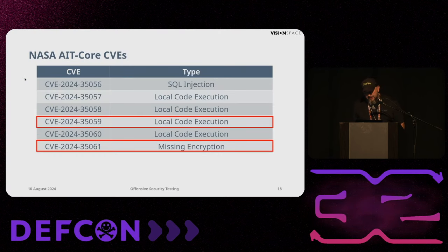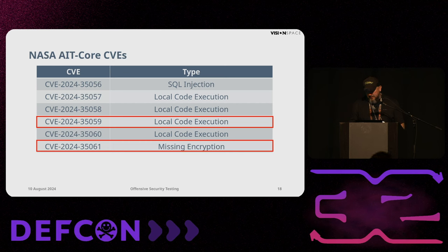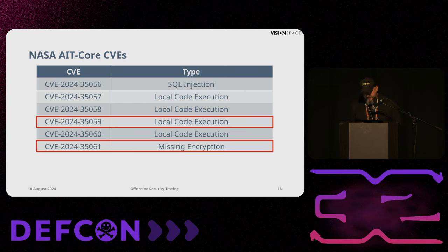Next up is the exploit chain for NASA AIT Core. Combining one of the local code executions and missing encryption, we managed to conduct a man-in-the-middle attack and inject our own payload into the communication stream, which is then triggered on the telemetry client and executed, giving us a reverse shell.